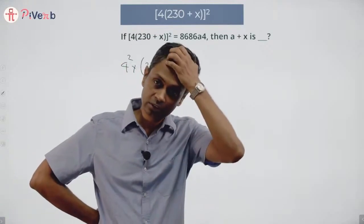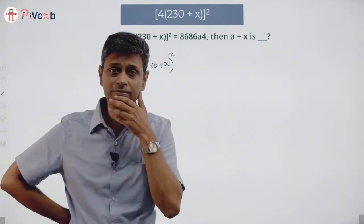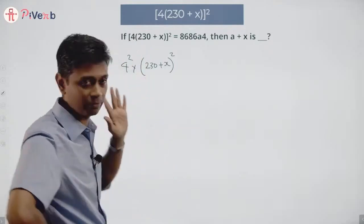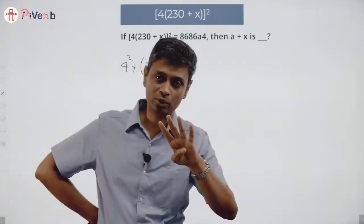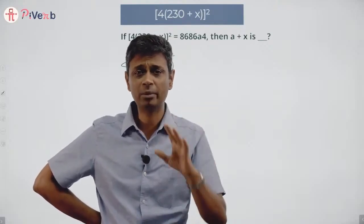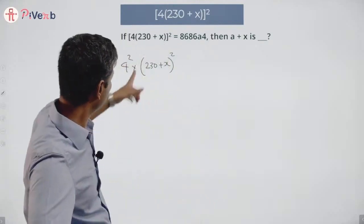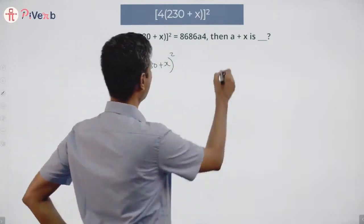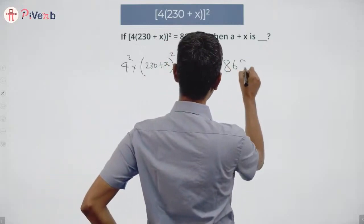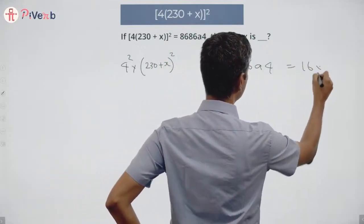That will be a multiple of 16. 4² is 16. I have a number that's a multiple of 4, if I square it, it will be a multiple of 16. If I have a number that's a multiple of 3, if I square it, it will be a multiple of 9. So this number is a multiple of 16. Our number 8686a4 is a multiple of 16, it is 16 into something.